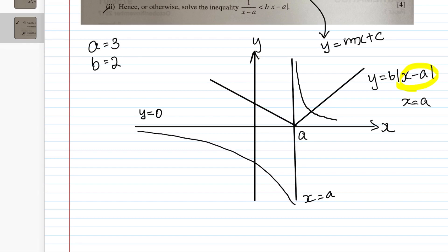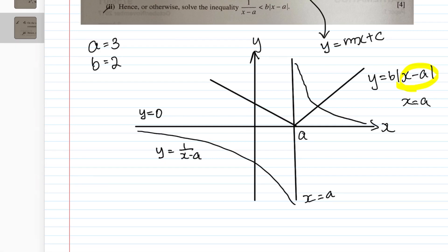The curve should not touch the asymptotes but go very close to them. All you need to do is write out that this curve is y = 1/(x - a), and note the y-intercept. To find the y-intercept, substitute x = 0: y = 1/(0 - a) = -1/a. So the curve intercepts the y-axis at -1/a. Also note that the asymptote x = a should always be drawn as a dotted line.